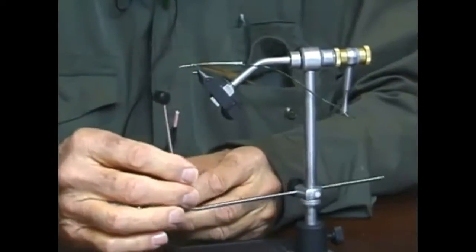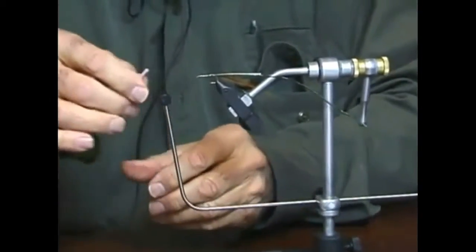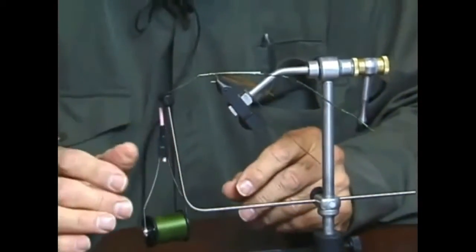I'm using a true rotary vise so I'm going to move the rotary position over to a point where I can lay the bobbin in the bobbin cradle.